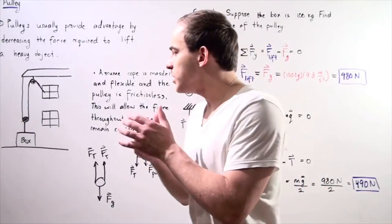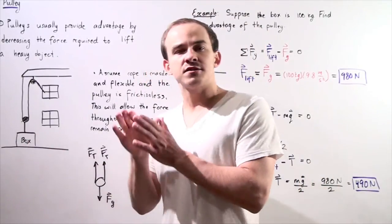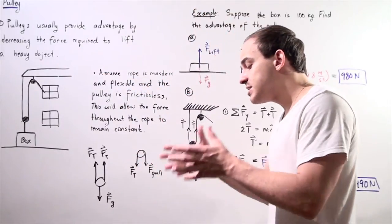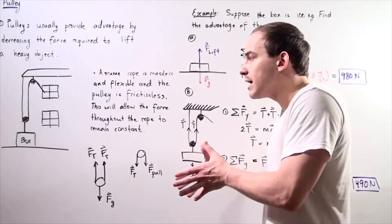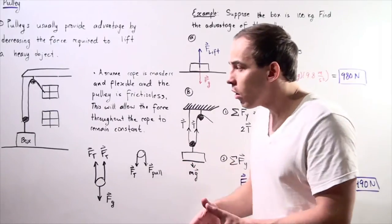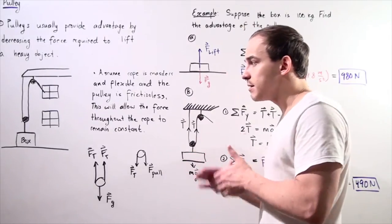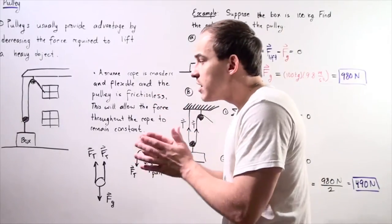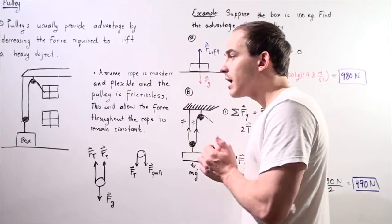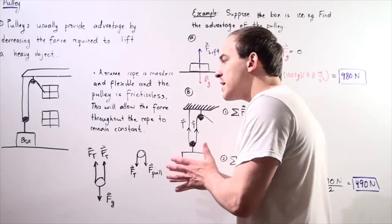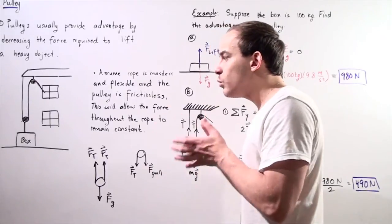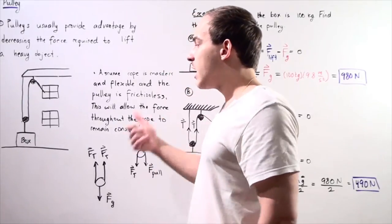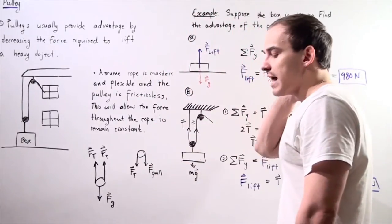Suppose we want to lift a very heavy box from the ground to our second floor apartment. We can either carry the box to the second floor or we can use a pulley system. If we use the pulley system, the amount of force required to lift that box will decrease compared to carrying the box via the staircase.